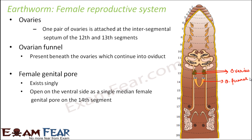The female genital pore opens singly on the ventral side as a single median female genital pore on the 14th segment. The ovaries release eggs, which enter the ovarian funnel, pass through the oviduct, and exit through the female genital pore. There is just one female genital pore, but there is a pair of male genital pores.